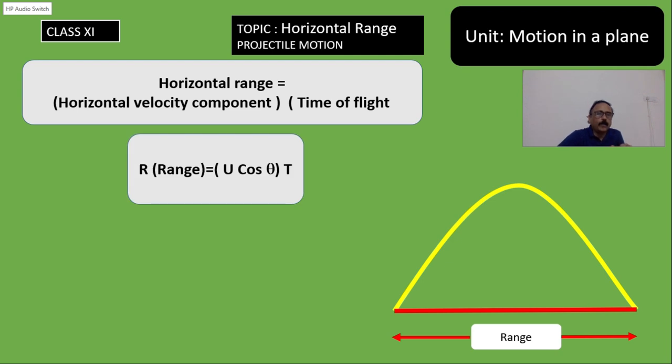Therefore, the formula will be u cos θ as it is horizontal component and then the time of flight is capital T. But we know the time of flight is 2u sin θ by g. In the last video, we have derived.